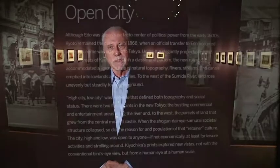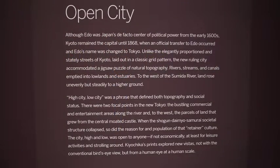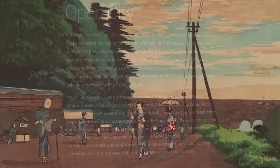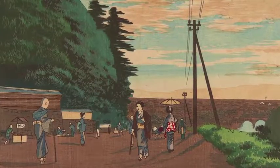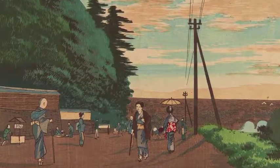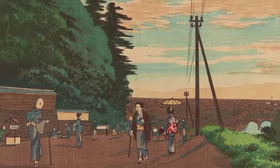We look at what was available to the new citizen of the new Tokyo — an open city, a city unrestricted, which they could travel both to highlands and lowlands, and Kiyo Chika provides those views.